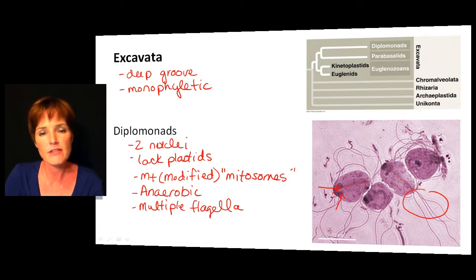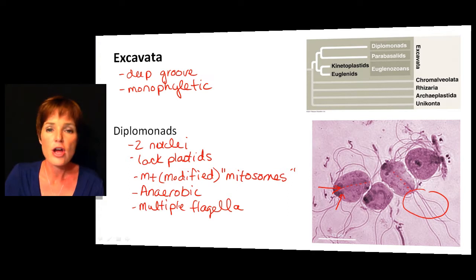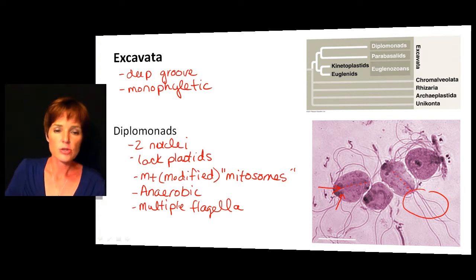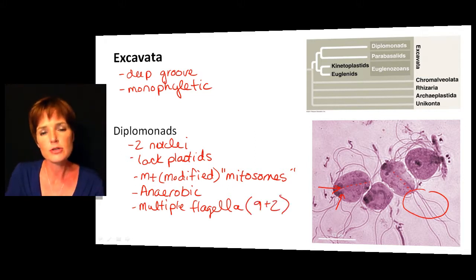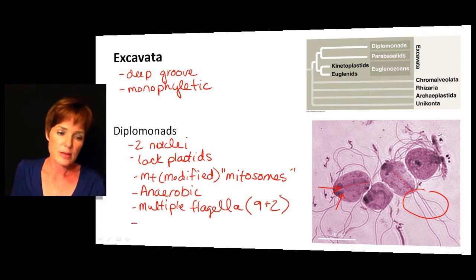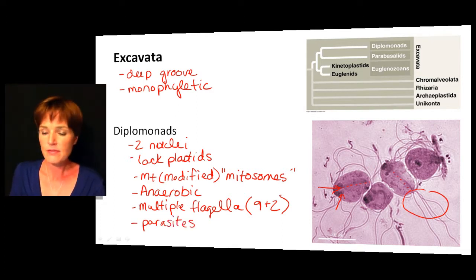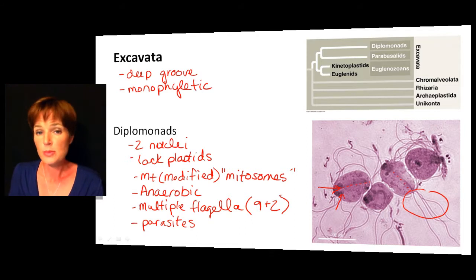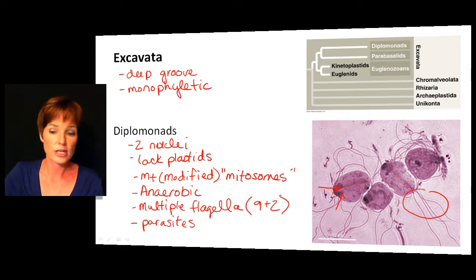It's a good place to point out that the flagella of eukaryotic cells, including protists, have a very different structure from what we found in bacteria. The eukaryotic flagella are often referred to as having a nine-plus-two arrangement, which has to do with how the microtubules happen to be bundled together. Eukaryotic cells will have that nine-plus-two arrangement. Most diplomonads are going to be parasitic organisms — they may infect animals, other protists, or even humans.